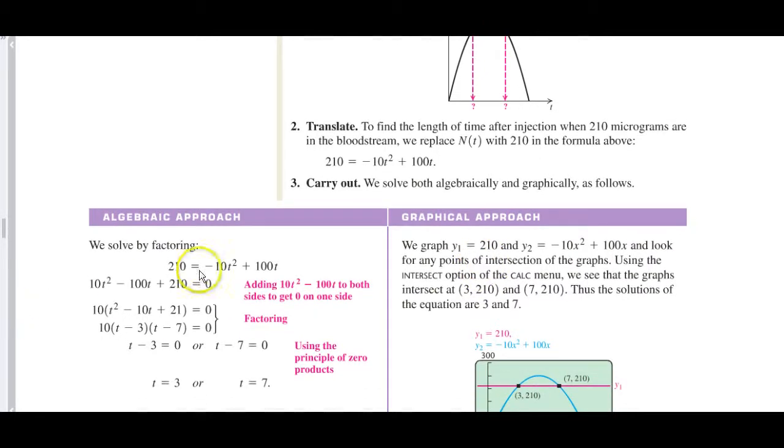Yeah, that's what they're doing. They're factoring out a 10 and they're getting this. This is easy to factor now. Factors of 21 that have a sum of 10 are 3 and 7. They're both going to be plus eventually. T = 3, T = 7.